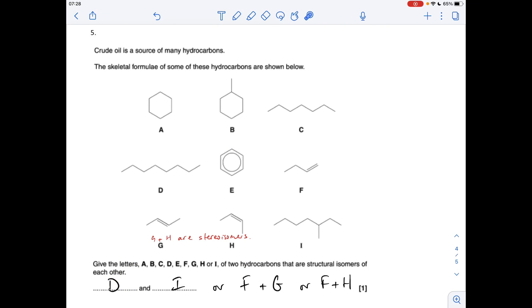And finally question five. The letters of the two hydrocarbons that are structural isomers of each other. So there's a couple of options you could have. D and I, they're structural isomers. F and G are, you could say F and H. What you can't say is G and H because they're stereoisomers. So you've got the E form there and the Z form of butene. They're not structural isomers, they're stereoisomers.